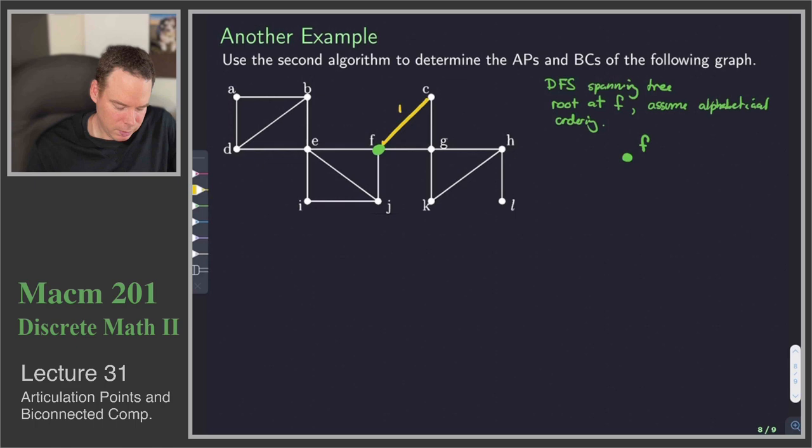And so then from C, now we pick the smallest neighbor, that's G. So that's edge number 2. Smallest neighbor of G is H, so we go off to H. That's going to be 3. Smallest neighbor of H is K, so that's edge 4.